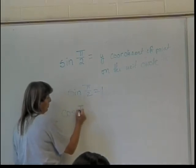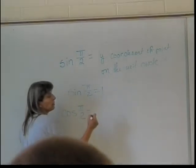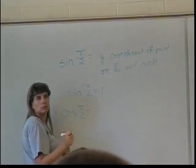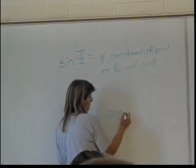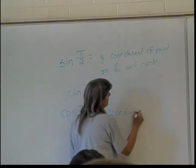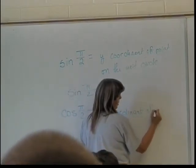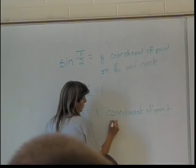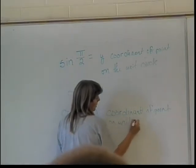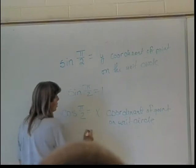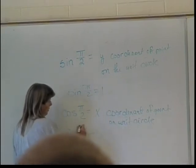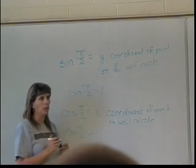Cosine of pi over 2 is defined as, anybody want to guess? The x coordinate. The x coordinate of the point on the unit circle. So 0? Yeah. So the cosine of pi over 2 is going to be 0.